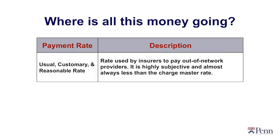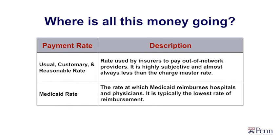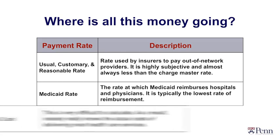A fifth rate is the Medicaid rate. This tends to be the lowest rate in the system — what Medicaid plans in states pay hospitals — and is always lower than the Medicare rate. Finally, there's what you might call the actual cost: what does it actually cost to provide care, admit the patient through the emergency room, send them to the floor, and have an operation or procedure? Those actual cost rates are typically ones we don't know.